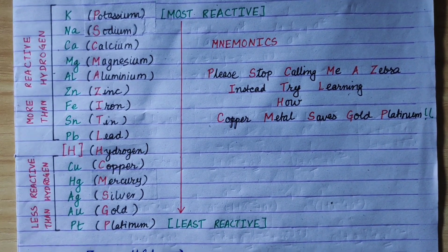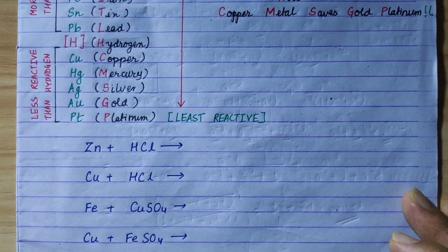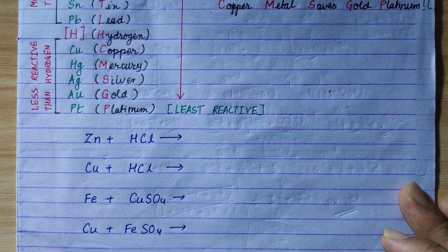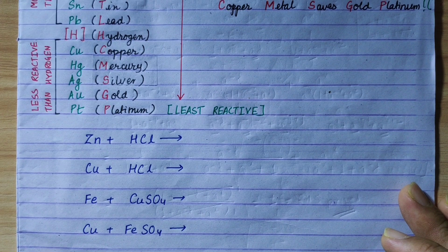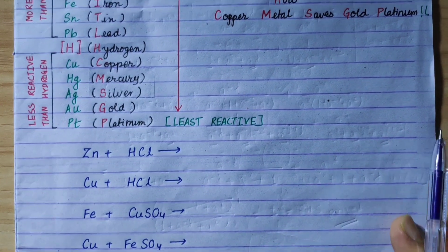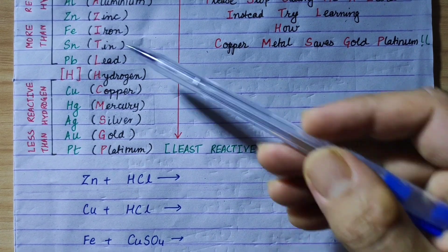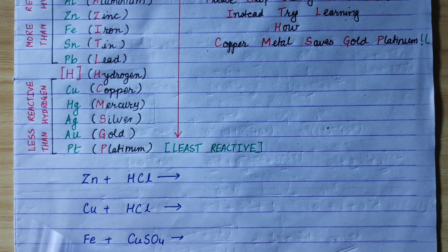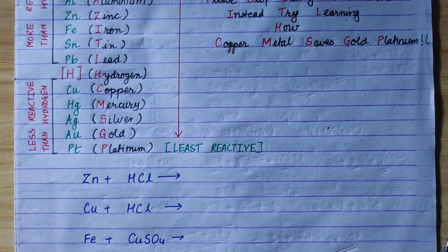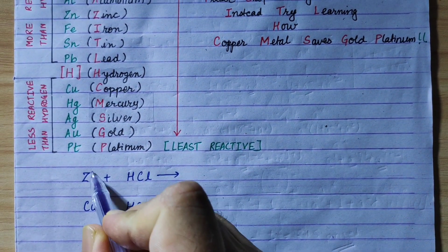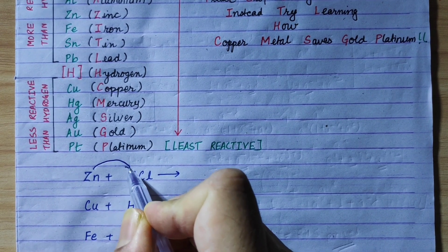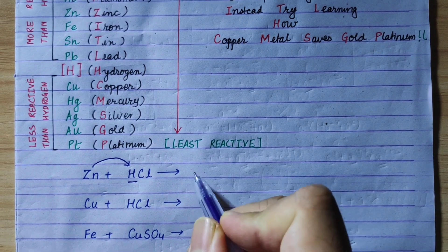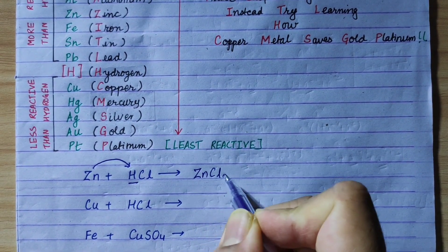Now let's talk about applying the electrochemical series to chemical reactions. Zinc lies above hydrogen in the series, so zinc is more reactive than hydrogen. This is why zinc is used in hydrogen lab preparation — zinc displaces hydrogen to form zinc chloride.